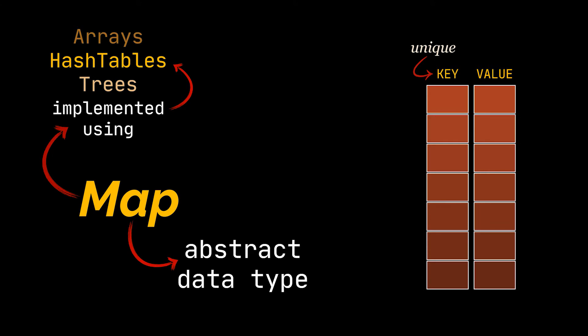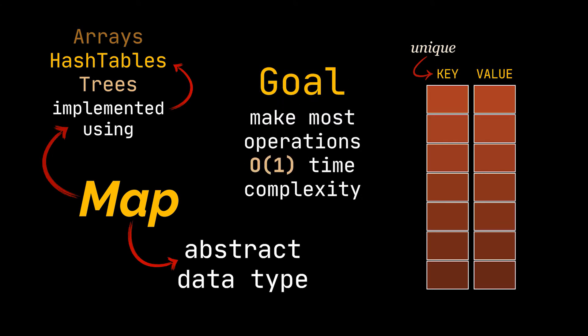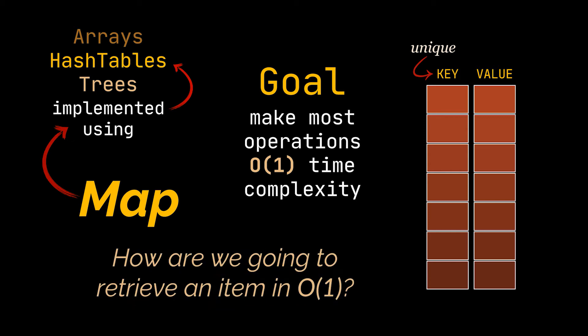The aim of maps is to make most operations reach O(1) time complexity. Let's focus on the get operation for now. How are we going to retrieve an item in O(1) time complexity?